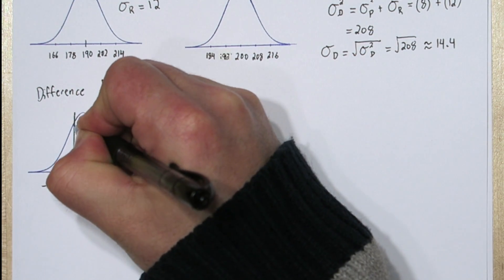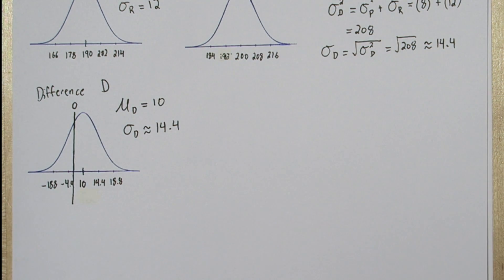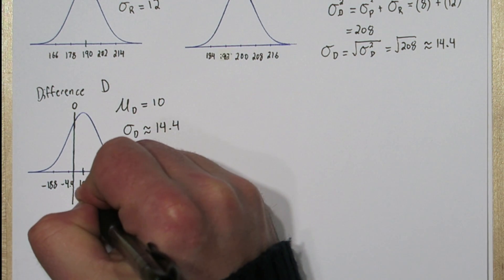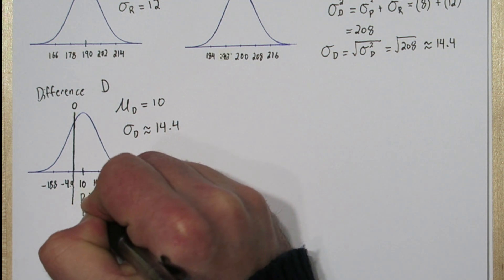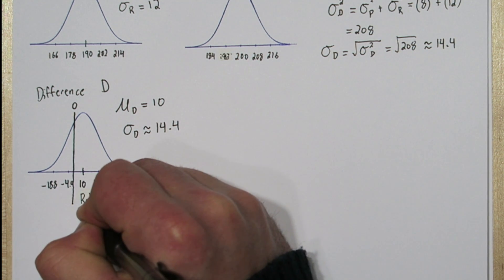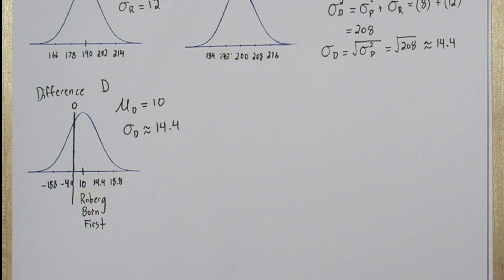Now on this axis, 0 would be about right here. If the difference is anywhere to the right of this line, it means the Roeberg baby was born first, because the Paneto birth date was a larger number, meaning it was born later in the year.